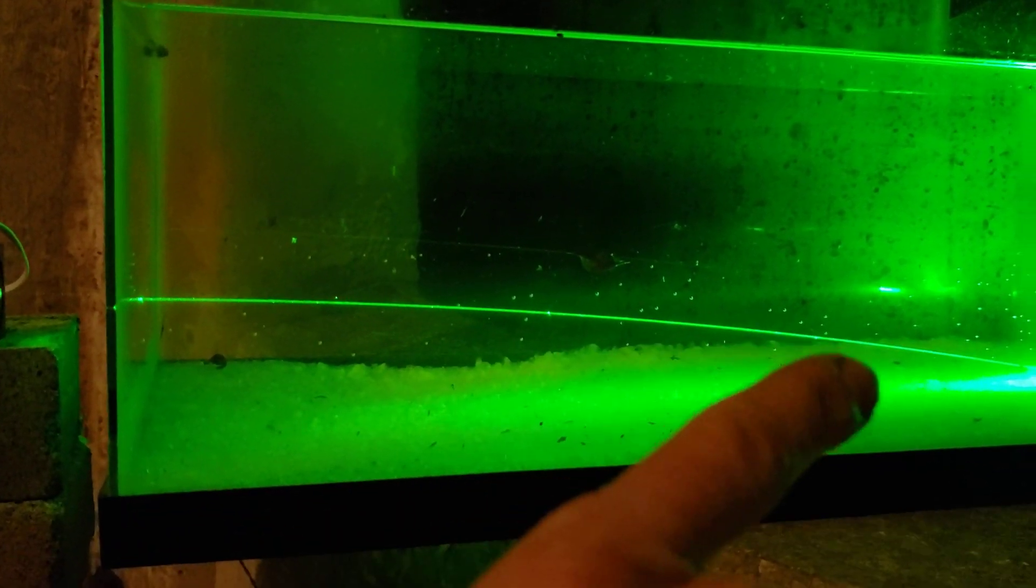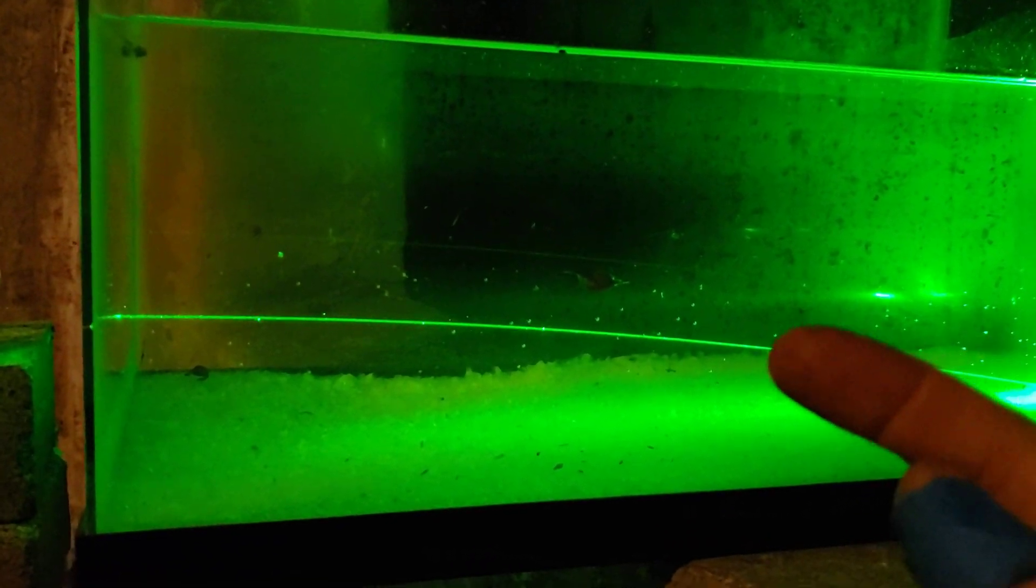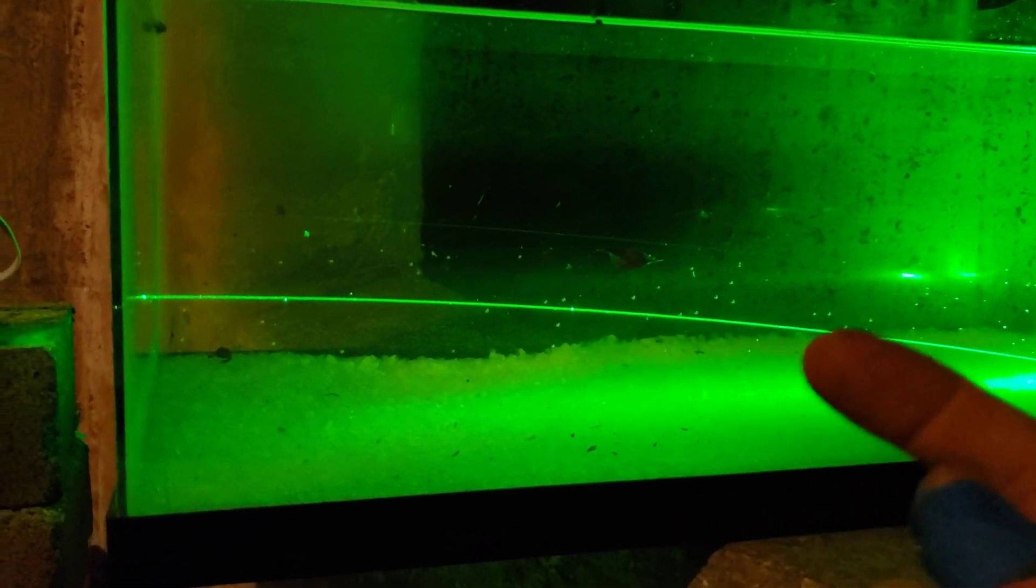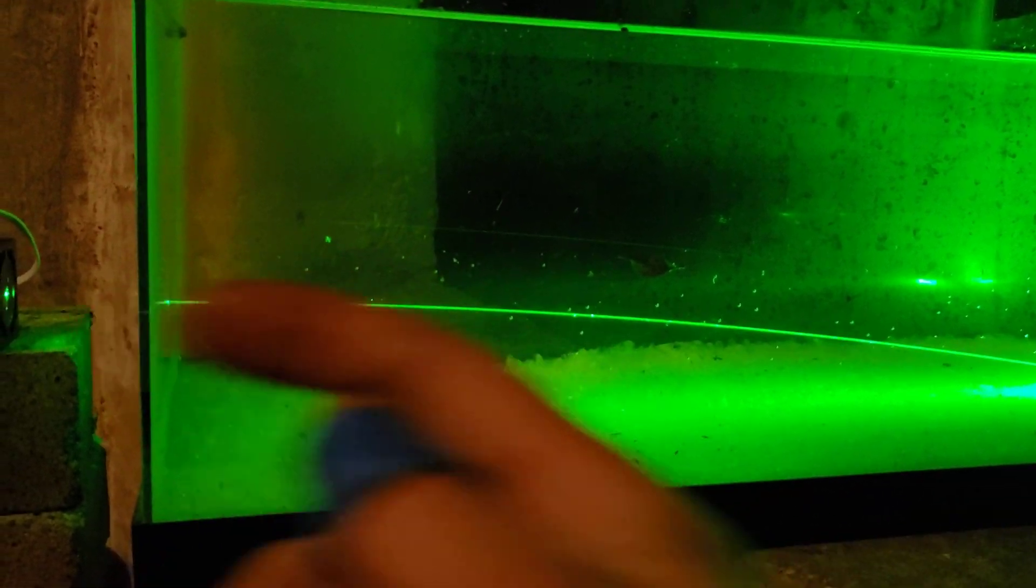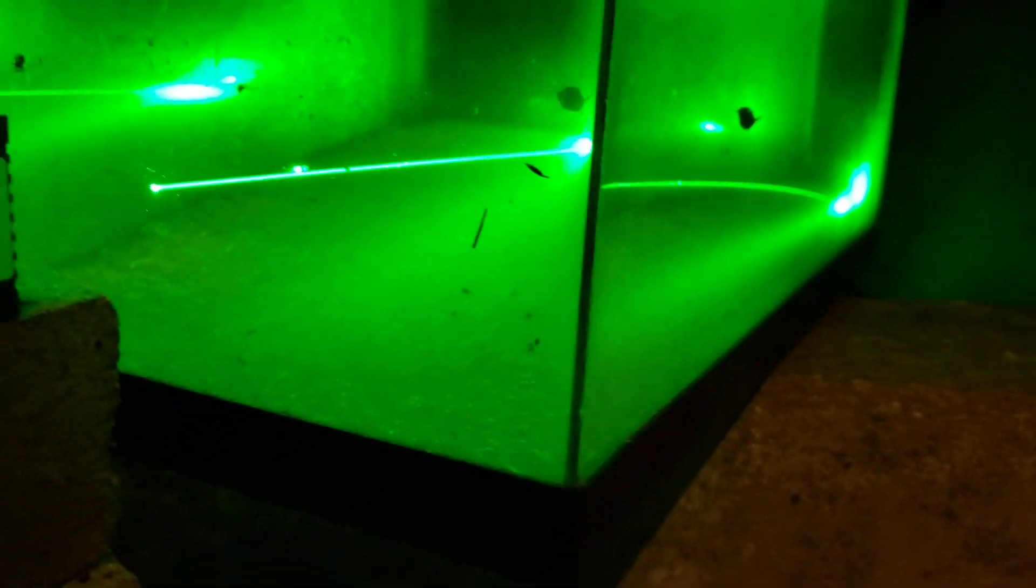But the light reflecting back from particles in the water follows the same reverse curve - the same curve back. So it cancels out the appearance of curving.